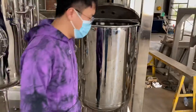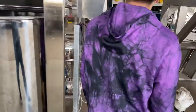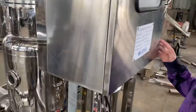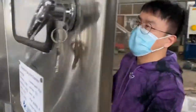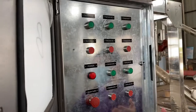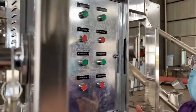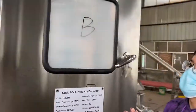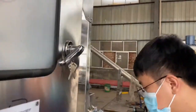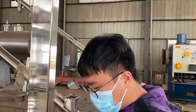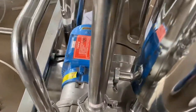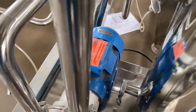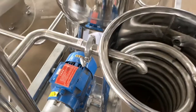Please follow me. This is the controller and you can see any buttons. This is the vacuum pump and this is the cold water tank.